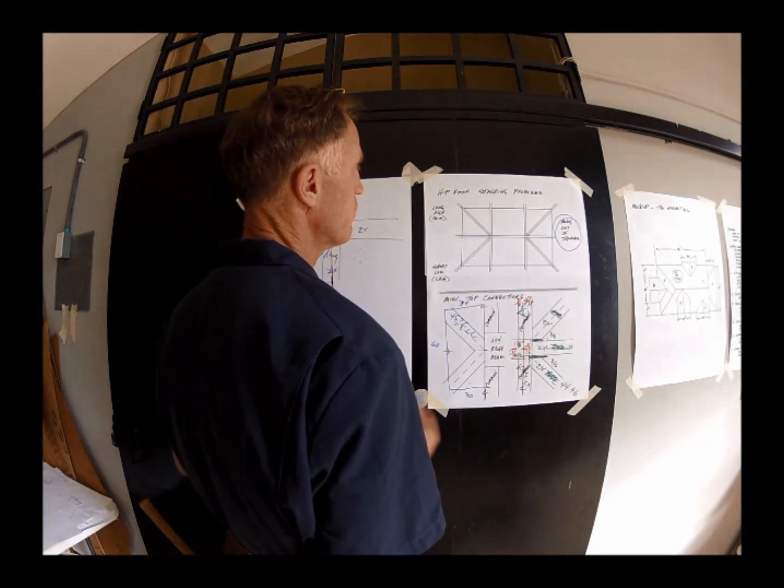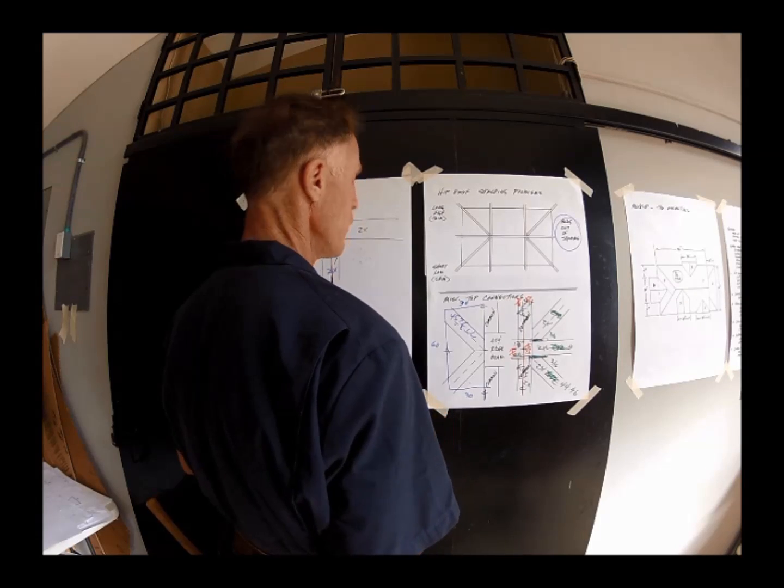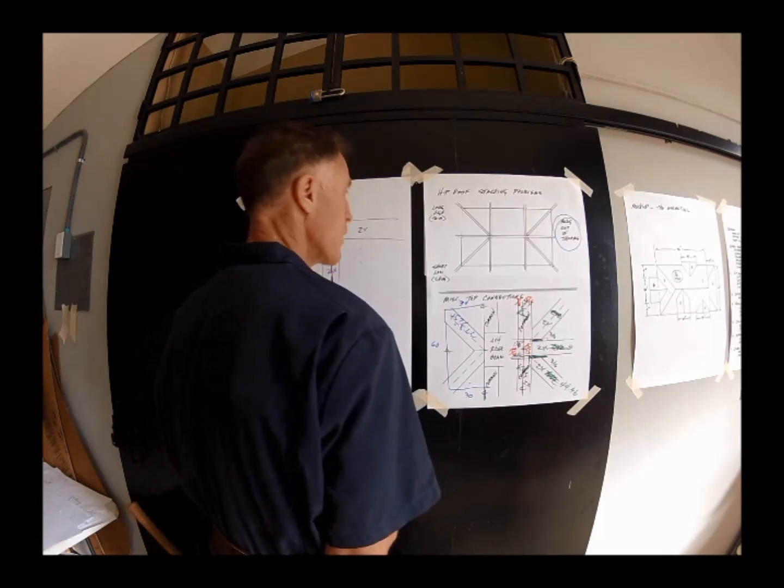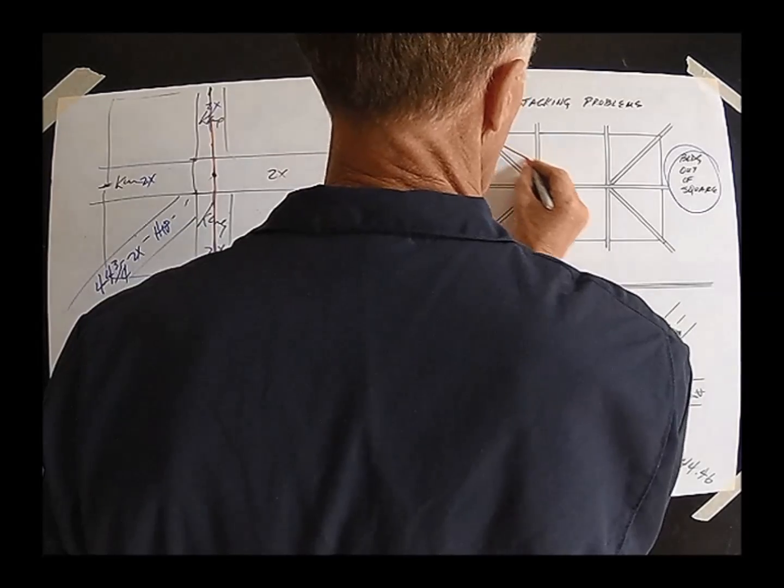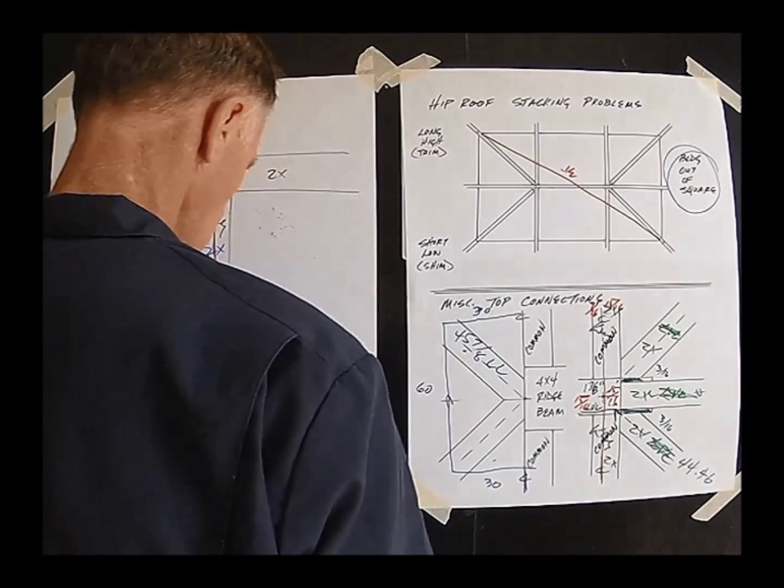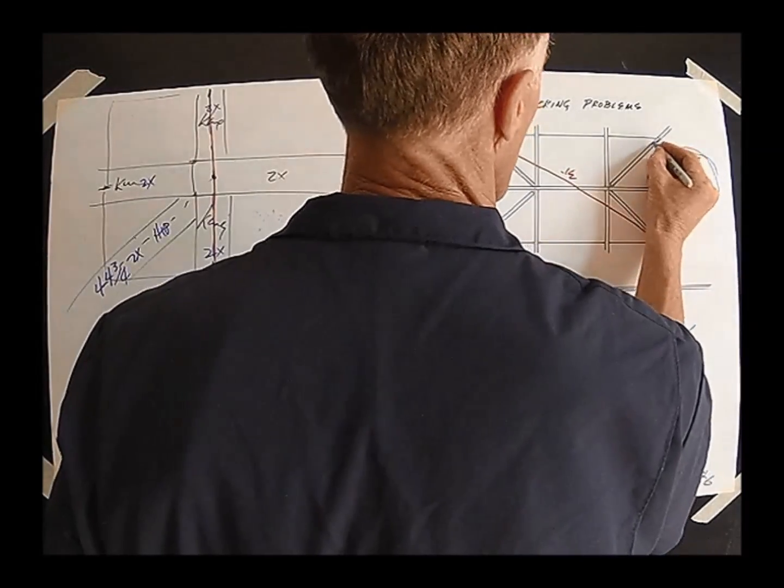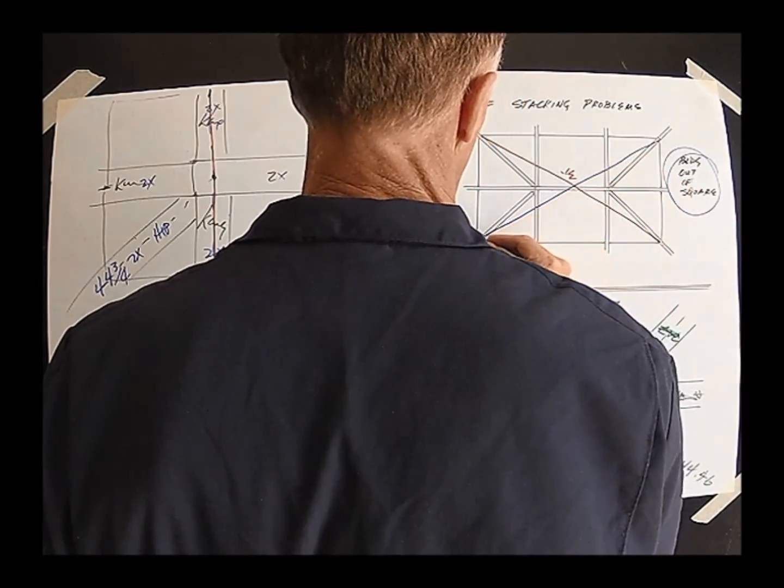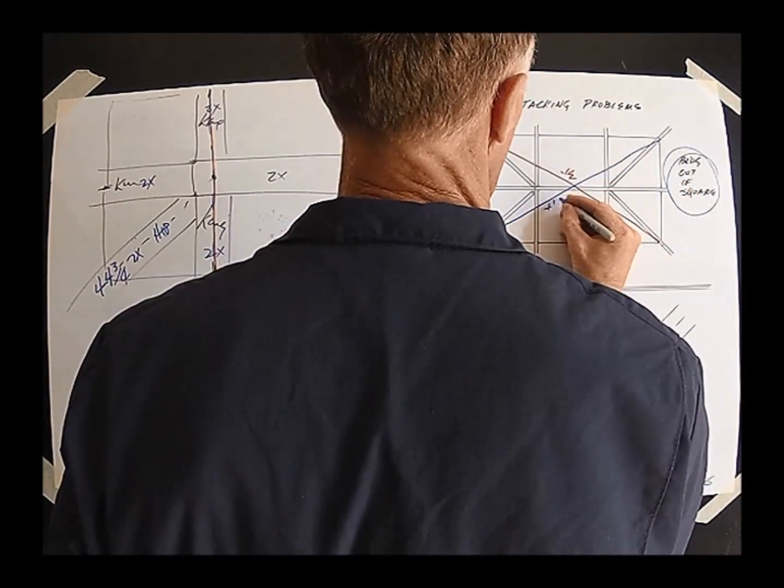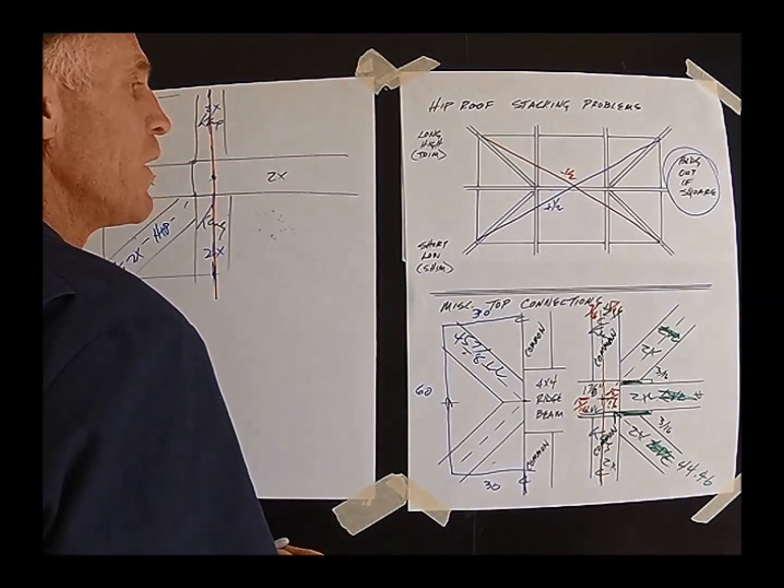You're just going to have problems because if you have a diagonal here of minus a half inch from what it should be and you have a diagonal here of plus one half of what should be, about an inch, an inch error.